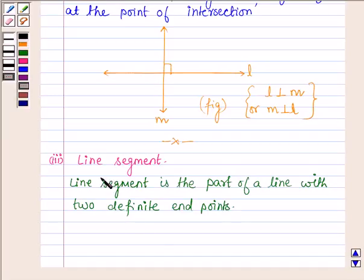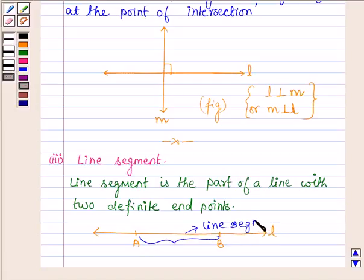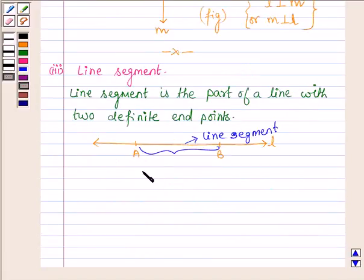with two definite end points. Suppose we have a line L, let us take two points A and B on L. Then this AB is called a line segment, and it is called line segment AB or BA.